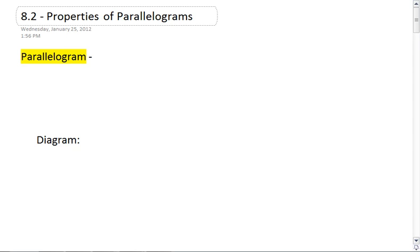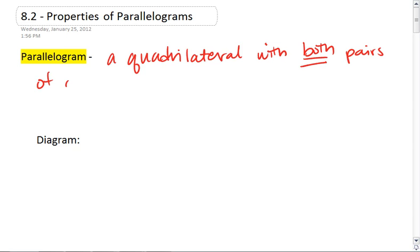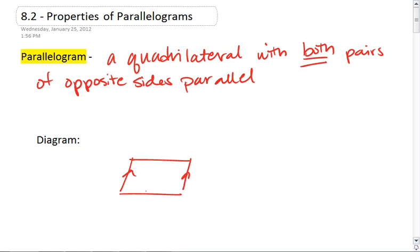A parallelogram is a type of quadrilateral. It is a quadrilateral with both pairs of opposite sides parallel. So we're going to have one pair of parallel sides and a second pair of parallel sides.